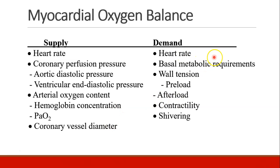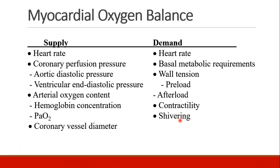Factors that increase oxygen demand include increased heart rate, increased basal metabolic requirements — meaning the heart has to work harder to deliver oxygen to tissues — wall tension from the pressure those ventricular walls generate (affected by preload and afterload), contractility, and shivering. When the body shivers, it uses a tremendous amount of muscle energy and needs a lot of oxygen. These are all things that increase demand.